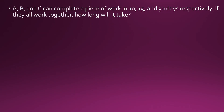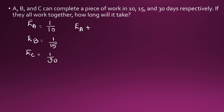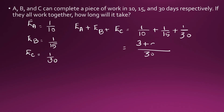A, B and C can complete a piece of work in 10, 15 and 30 days respectively. If they all work together, how long will it take? Efficiency of A is 1 by 10, efficiency of B is 1 by 15, efficiency of C is 1 by 30. When they all work together their efficiencies get added: 1 by 10 plus 1 by 15 plus 1 by 30. LCM is 30, giving 3 plus 2 plus 1, which is 6 by 30 or 1 by 5. Time taken is the reciprocal of efficiency, which is 5 days.